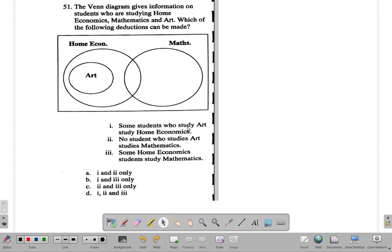One: some students who study art study home economics. But all of them who study art study home economics. So what? If I had said all of them, I could conclude that is correct. Some, you know, in logic, some can be all of them as well.